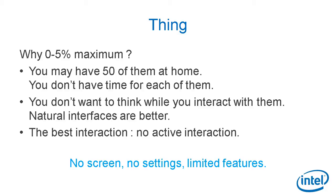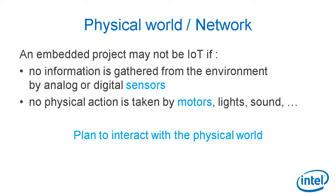Natural interfaces are a lot better than computer interfaces for IoT, and the best interaction is no active interaction at all. If you are not aware that you are interacting with an IoT solution, that's a good IoT solution. So: no screen — that's the best way to have no interaction; a limited set of settings so you don't have to configure anything; and limited features. In IoT solutions, you really want to interact with the physical world — gathering data from the environment with sensors, and acting in the environment with motors, lights, and sounds.